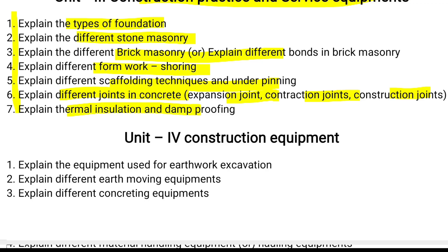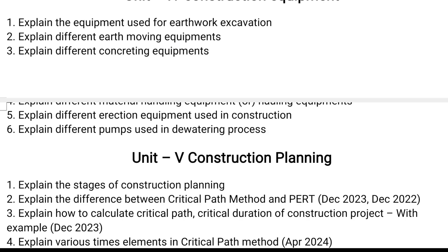Unit four has six questions. The first question is equipment used for earthwork excavation — backhoe, power shovel, and scrapers. The second is earth moving equipment. Then different concreting equipment: concrete batching plant, concrete mixer, and vibrators — these are all equipment used for concreting work. Next is material handling equipment, including conveyors.